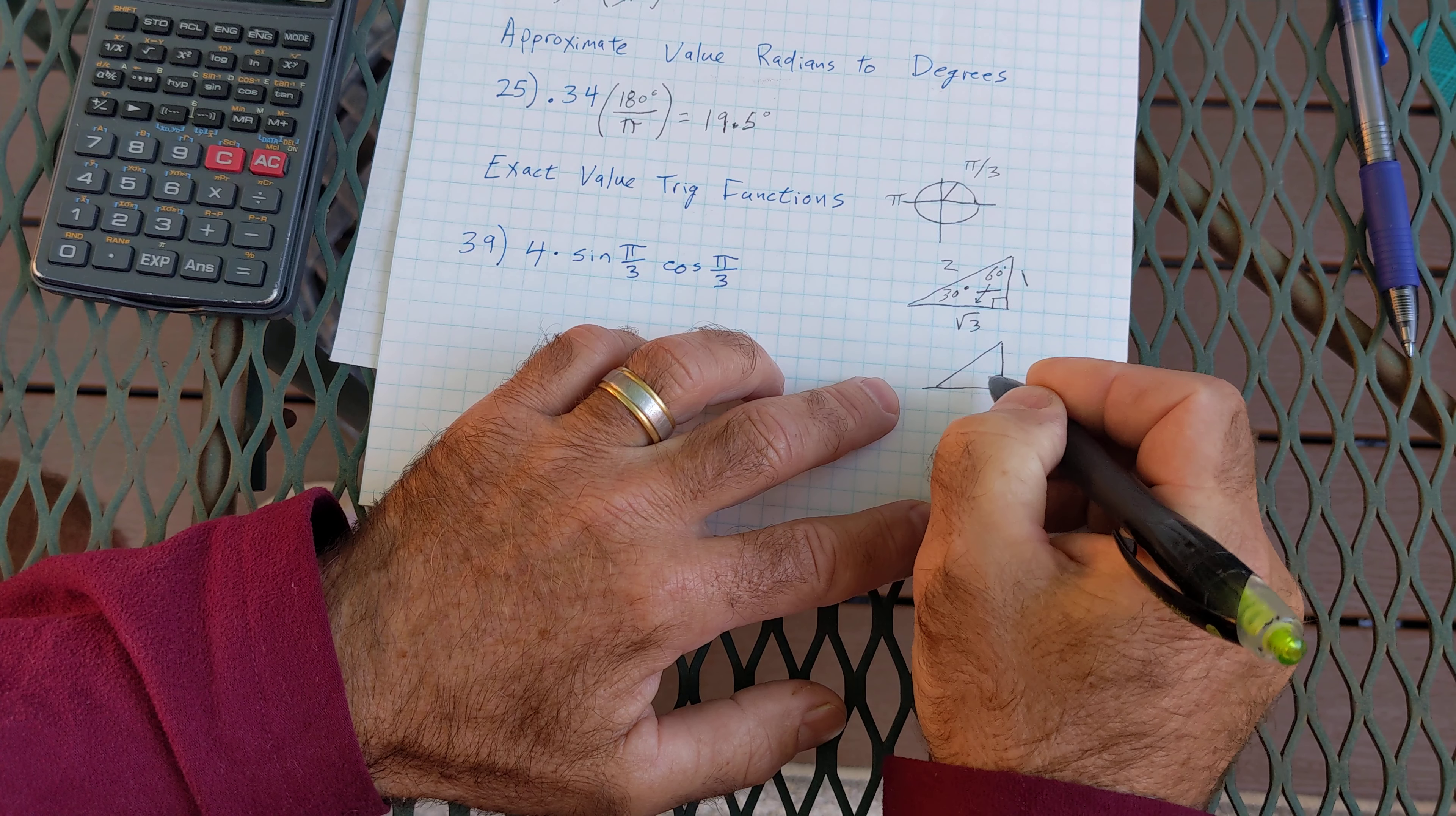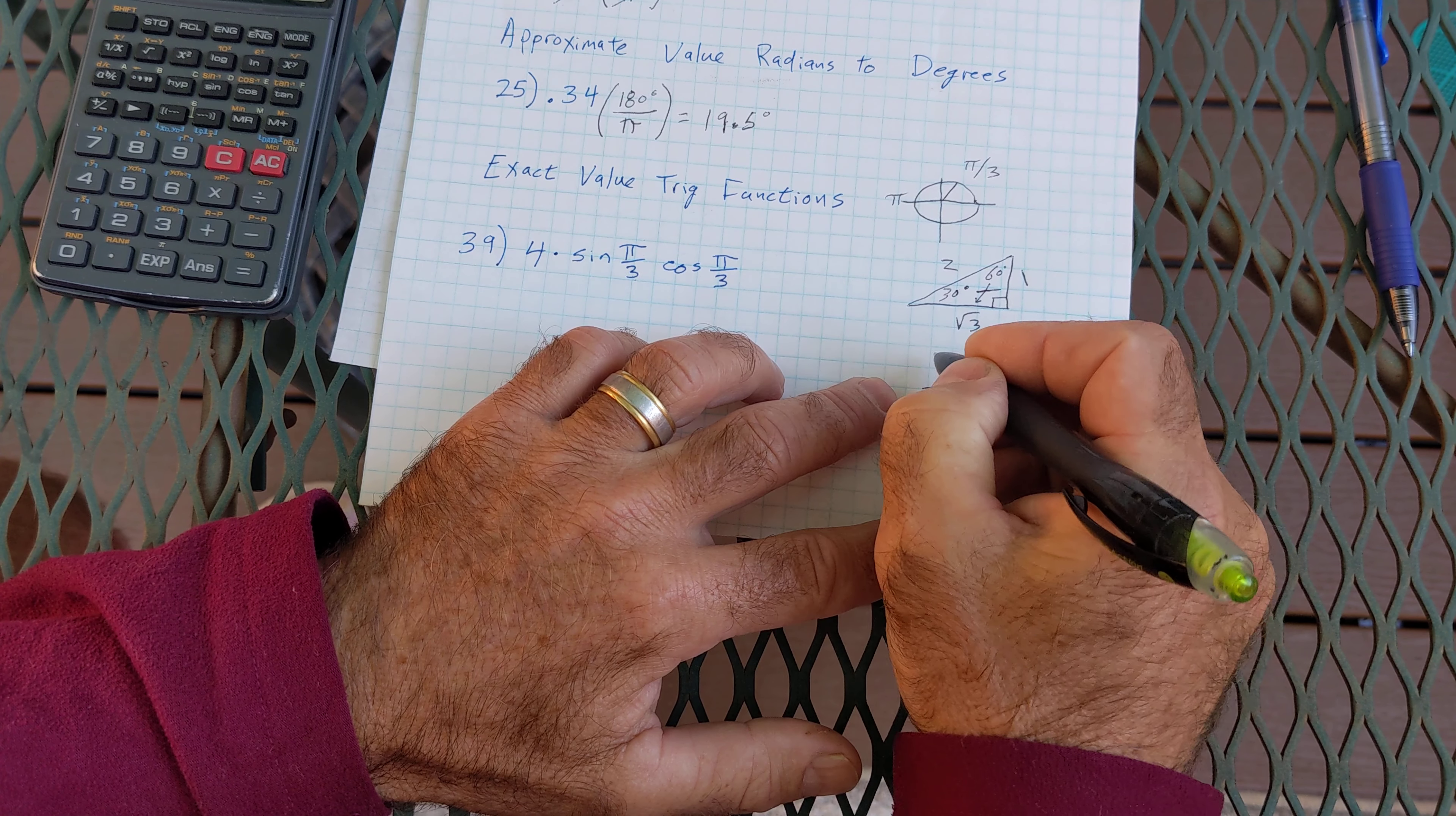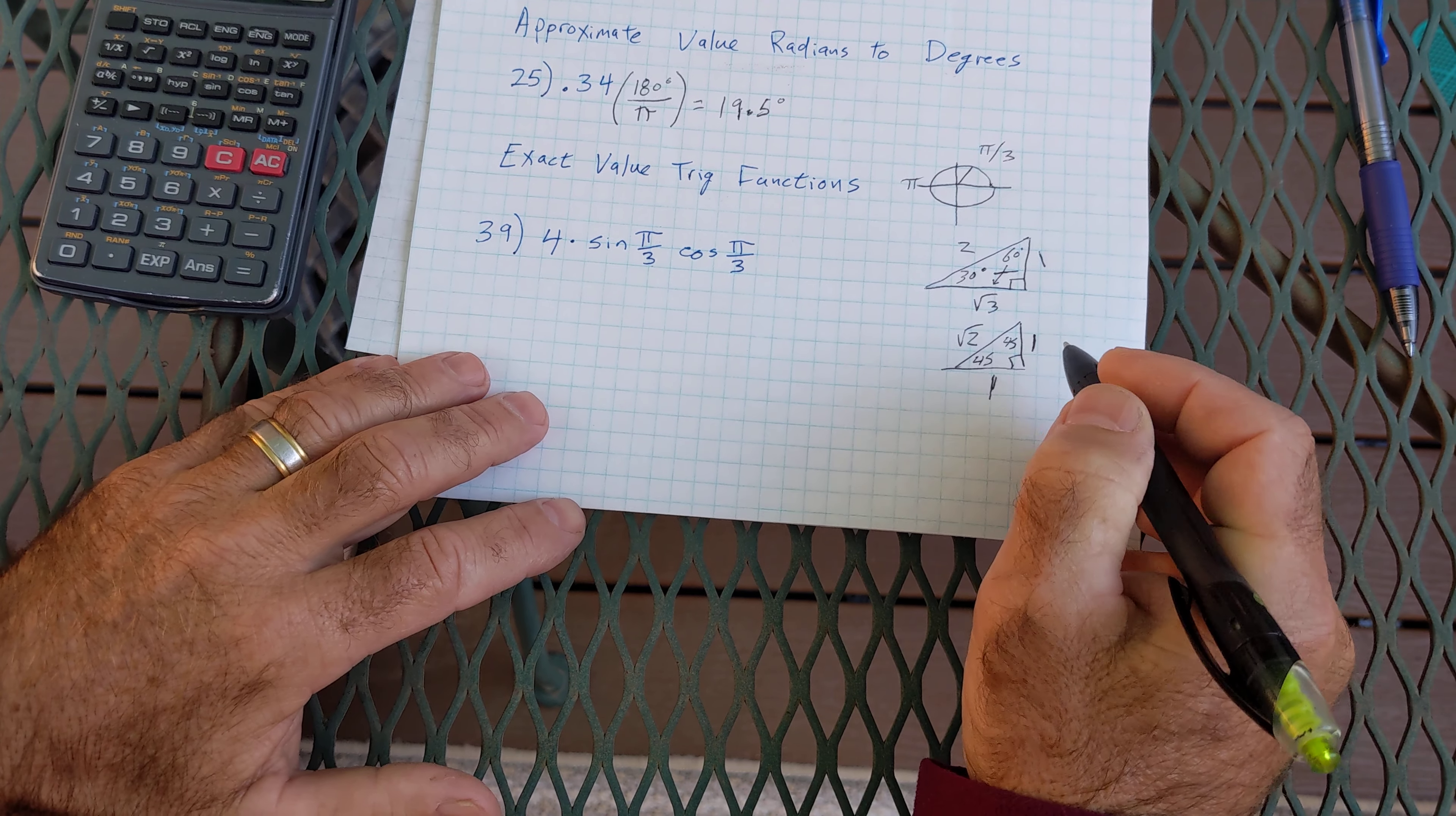In the isosceles right, this is 45 and 45. The ratio of sides is always 1 to 1 to root 2. When you're in different quadrants, they'll have different signs, but the ratios will always be the same.